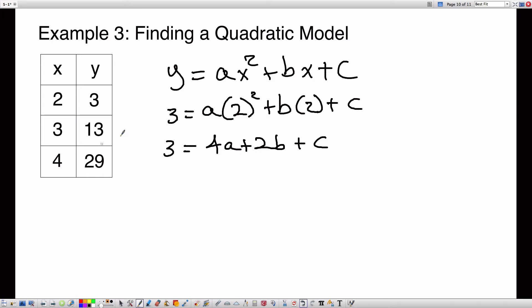Now if I plug in the next one, 13 for Y, A times X squared plus B times X, I'm plugging in 3 for X and 13 for Y. I get the equation 13 equals 9A plus 3B plus C. So now I have two equations with three variables from two points. I'm going to plug in the last one, 29 for Y, into this equation. 29 for Y equals A times X squared, X is going to be 4.